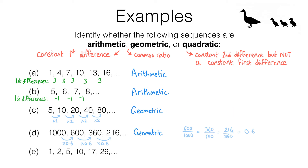If you try to find a common ratio for an arithmetic sequence you'll run into a problem. For example, take sequence A. To go from 1 to 4 you need to multiply by 4, but to go from 4 to 7 multiplying by 4 doesn't work, and from 7 to 10 multiplying by 4 doesn't work either. So we don't have this common ratio — the idea of multiplying by the same quantity to go from one term to the next.